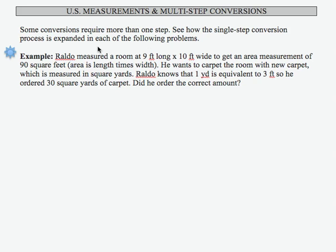In this multi-step conversion, Raldo measures a room at 9 feet long by 10 feet wide. He wants to get an area measurement for carpet, so he finds that 9 feet times 10 feet is 90 square feet. That's the area of the room.